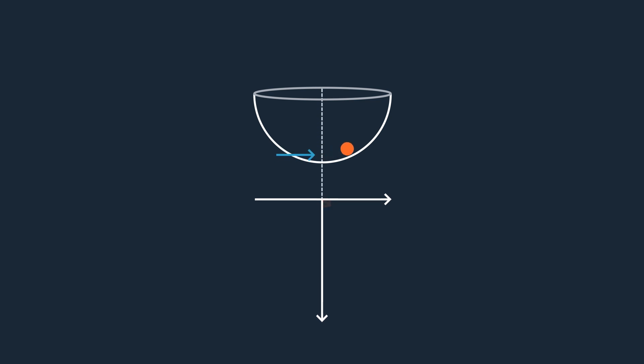There is one more thing to mention about this example. What if for the first situation I flicked the marble really hard, or was able to get a golf club in there and whacked it out of the bowl? It's obvious the marble wouldn't magically return to its initial position if it flew out of the bowl entirely, yet the system is still stable. Those examples are considered unbounded inputs, and they can make it difficult to judge if the system is stable or not.